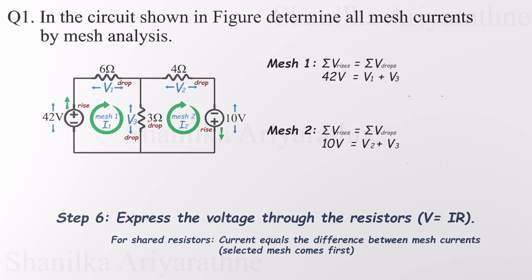Now it's time to express the resistor voltages using Ohm's law, V equals IR. This step is usually straightforward, unless you're dealing with shared resistors between two meshes. In that case, you have to use the difference between the two mesh currents. And here's the key. Always put the current from the mesh you're analyzing first in the subtraction.